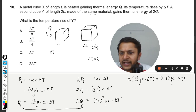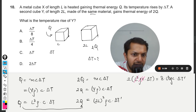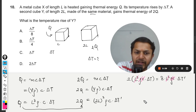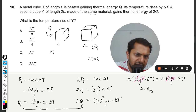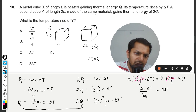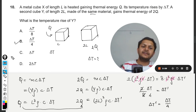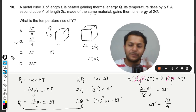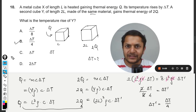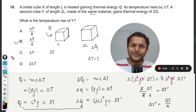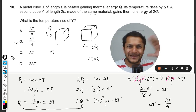Clearly, l³ρc is a constant value and cancels out from both sides, giving us ΔT' = 2ΔT / 8 = ΔT/4. So the answer is option B. Any doubts, please ask in the comment section. This is Professor Varun — thanks for joining, all the best, bye.